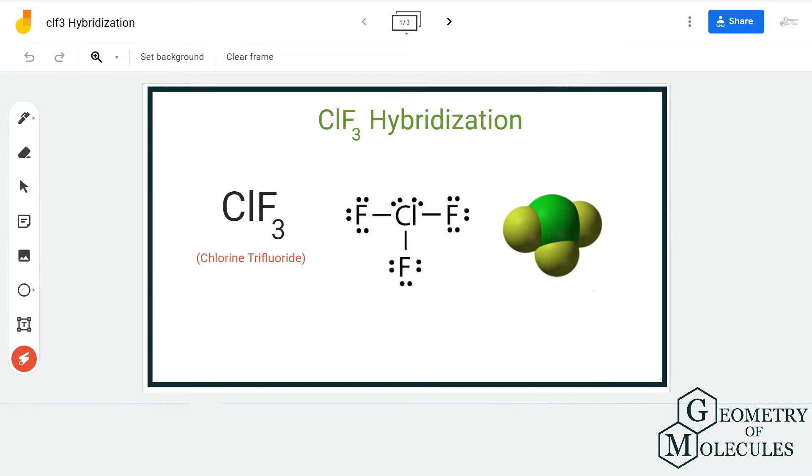going to look at its Lewis structure. So this is the Lewis structure of ClF3 and you can see that chlorine atom is forming three bonds with three fluorine atoms over here, and apart from that there are two lone